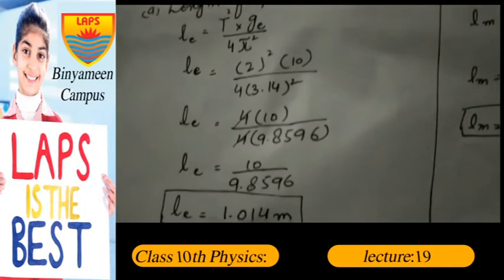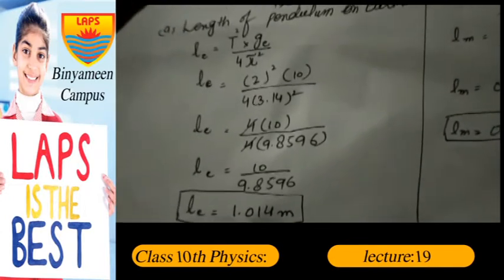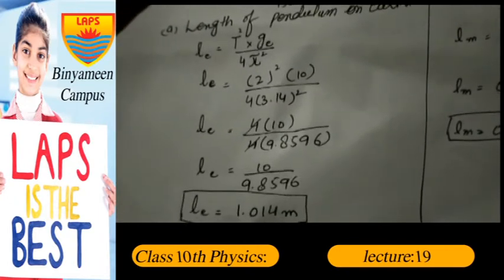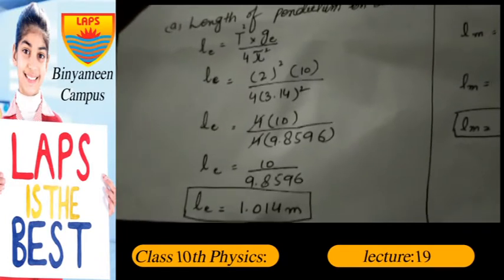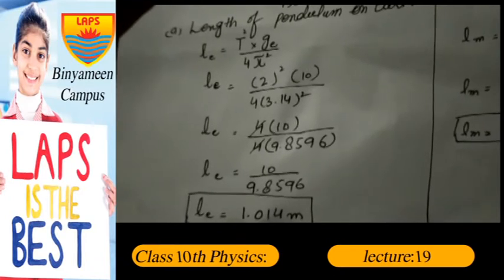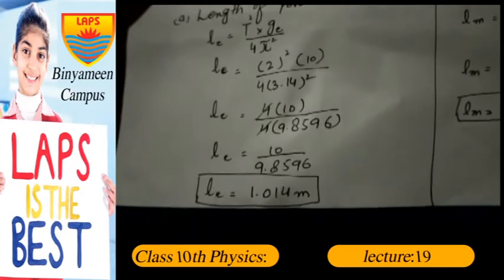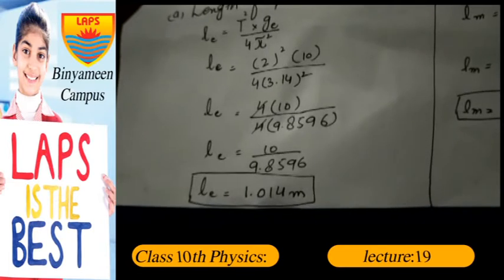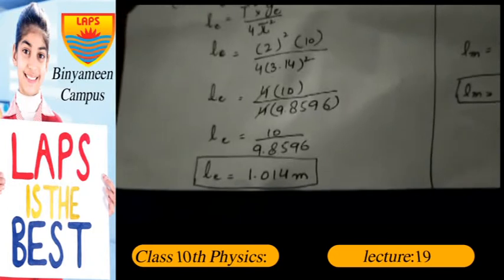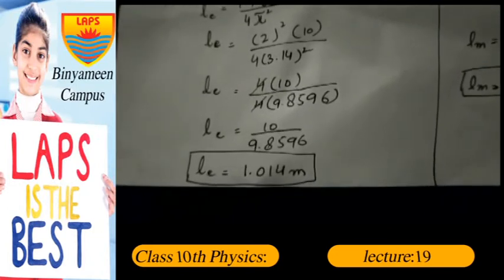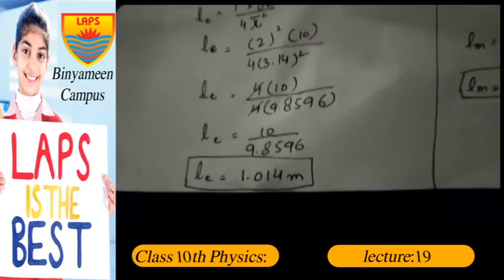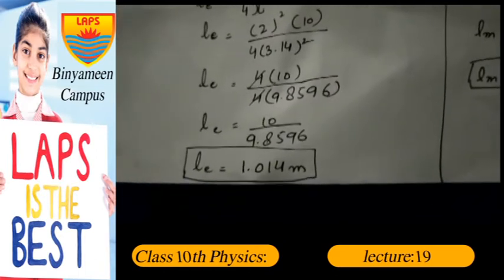Now substituting the values for the length of the pendulum on Earth: l = (2)² × 10 / (4 × (3.14)²) = 4 × 10 / (4 × 9.8596) = 40 / 39.4384. Dividing, the length of the pendulum on Earth is 1.014 meters.